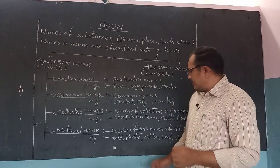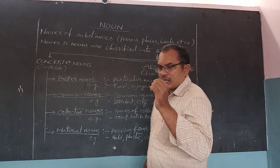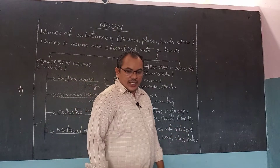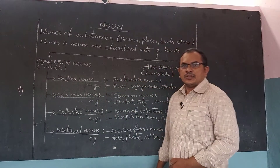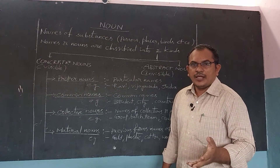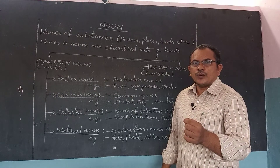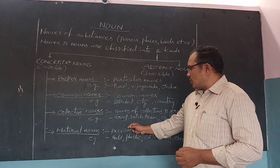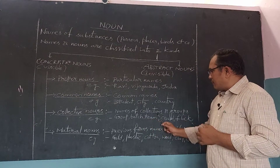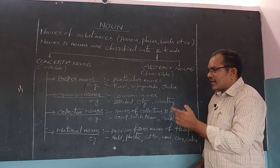Flock means a collection of sheep. Regiment means a group of soldiers — army. Family is a collection of family members. So all of these are collections of subjects, students, players, men or women, or sheep. All of them are collections, that's why they are identified as collective nouns.